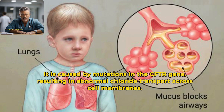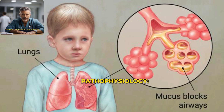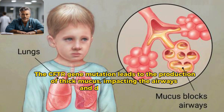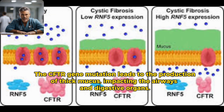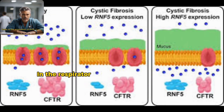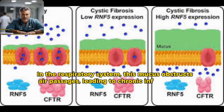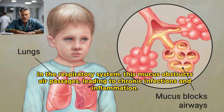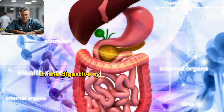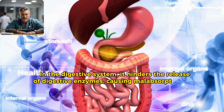Pathophysiology: The CFTR gene mutation leads to the production of thick mucus impacting the airways and digestive organs. In the respiratory system, this mucus obstructs air passages, leading to chronic infections and inflammation.